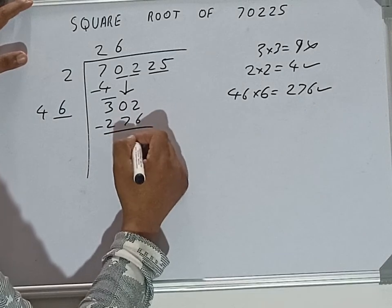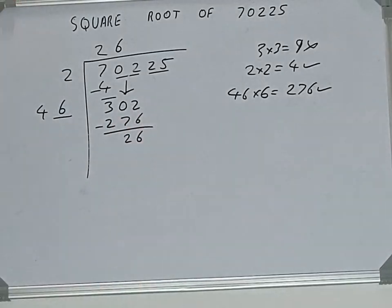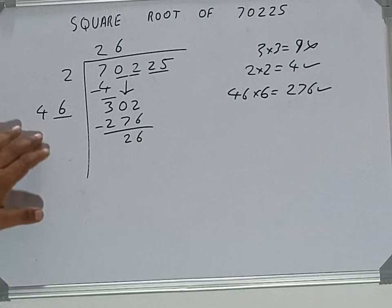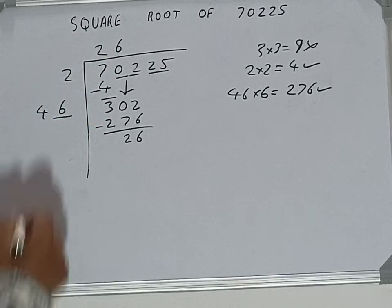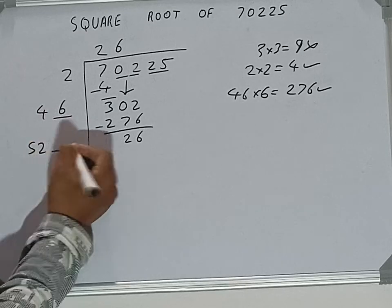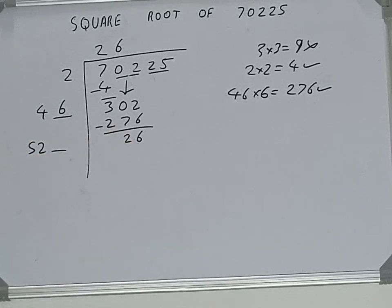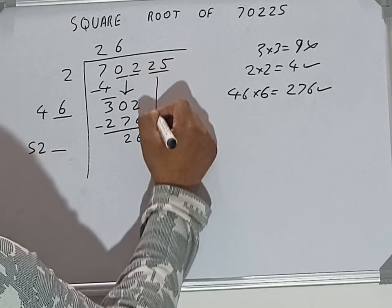Now 46 into six we did, so add both. So 46 plus 6 will be 52 and keep a digit extra, and this number we need to make it big. So bring the next pair down and it will be 2625.